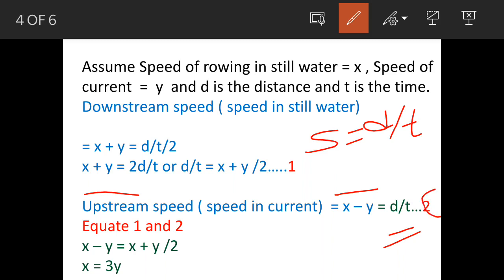We got two values of d/t. In equation 1, d/t equals (x+y)/2. In equation 2, d/t equals x minus y. When we equate them, we get x minus y equals (x+y)/2. When you solve it, you get x equals 3y.